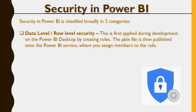This is applied during development on the Power BI desktop by creating roles. The PBIX file is then published onto the Power BI service where you assign members to the role. The data level security, or row level security, means that you have the same dashboard or the same report, and then depending upon who has logged in, they would see the data pertaining to them. For example, the country manager for US, India, and UK each want to access data only for their respective countries, while the CEO would access data across the globe. That is an example of data security, and we are going to talk more on that in the next slide.